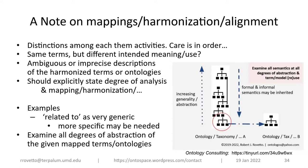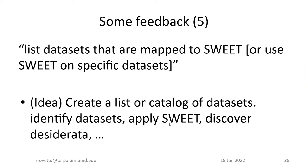If one ontology or taxonomy links to or uses a concept from another ontology, it can inherit the semantic content and any computable consequences going up that chain. The formal and informal semantics can be inherited to the ontology you're mapping or harmonizing with, so it's important to examine all the semantics and all degrees of abstraction that a term or model may reuse.